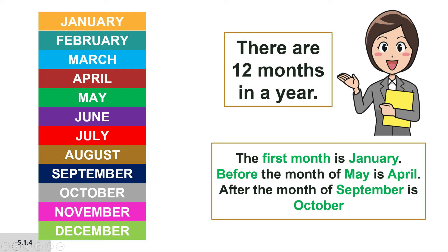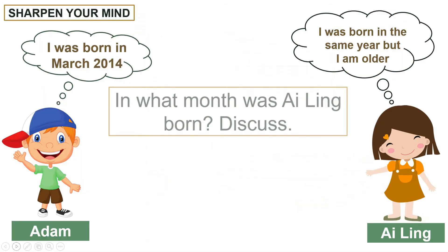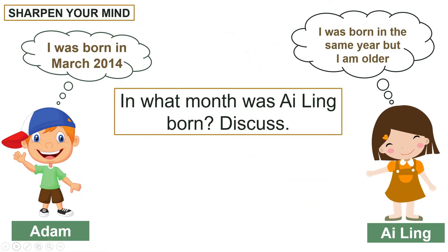Let's see — the first month is January. Before the month of May is April. Yes, you are right! After the month of September — can you guess? Yes, it is October. Let's sharpen our mind with a question.